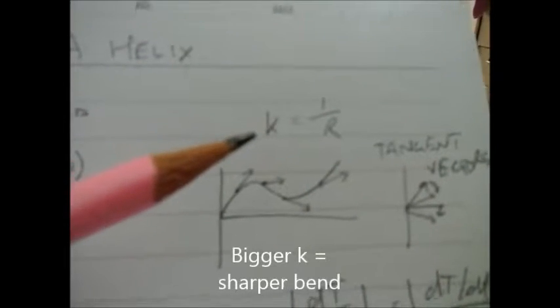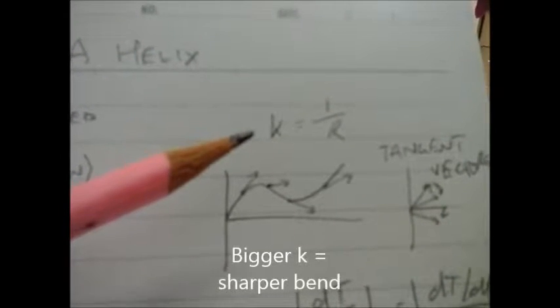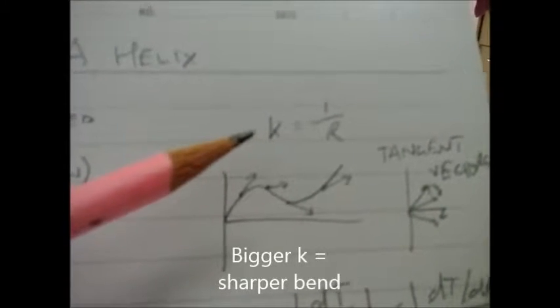That makes sense because the bigger the circle is, the less of a curve you'd be going around, so the number would be smaller. The bigger this number k, the more curvy the bend is, like the bend in a road on a motorbike. The bigger the k, the bigger the bend.